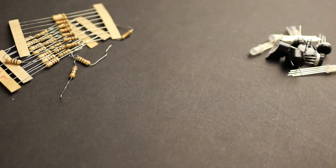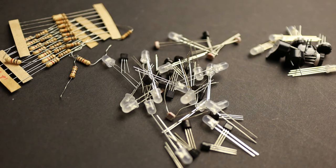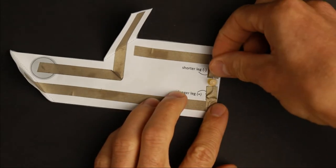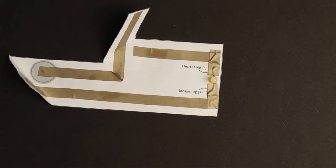For electronic components, through hole components with long legs are much easier to use with paper circuits. I do not use surface mount because they are often tiny and more difficult to connect. Components are attached with short strips of conductive tape.